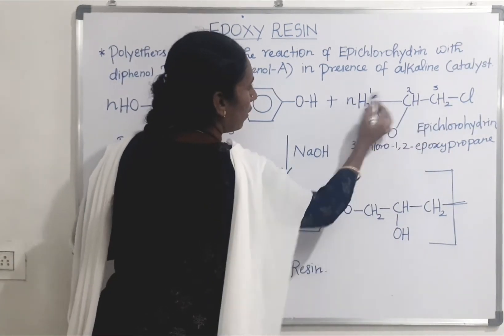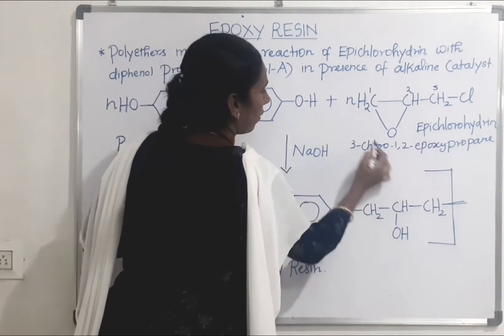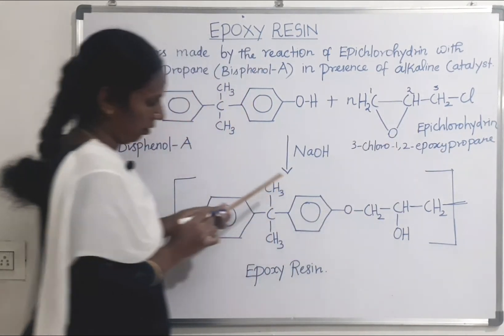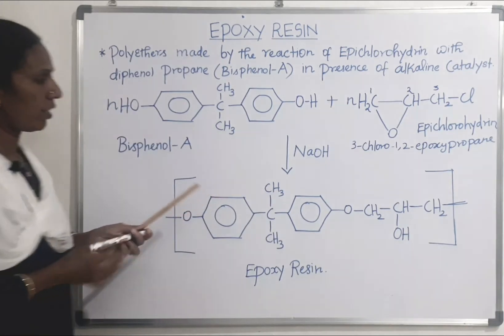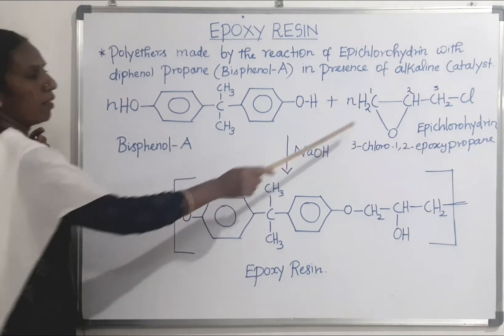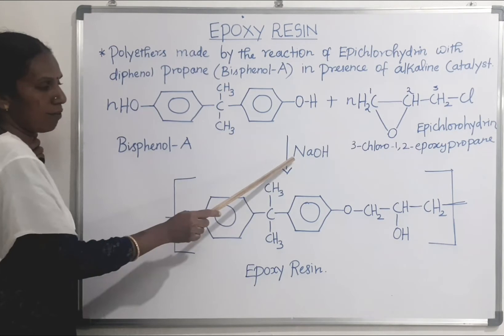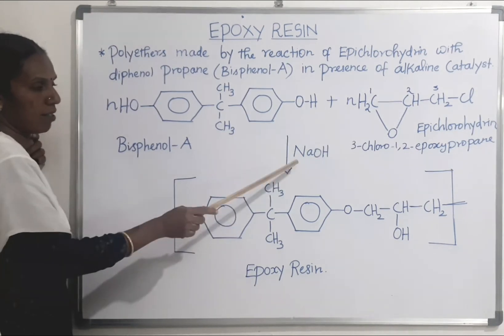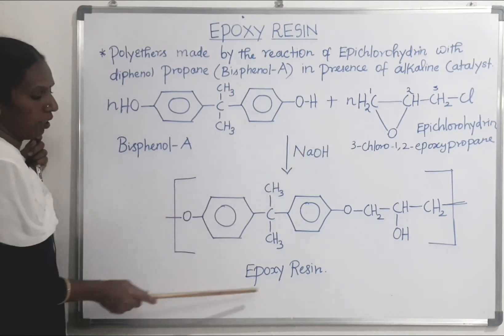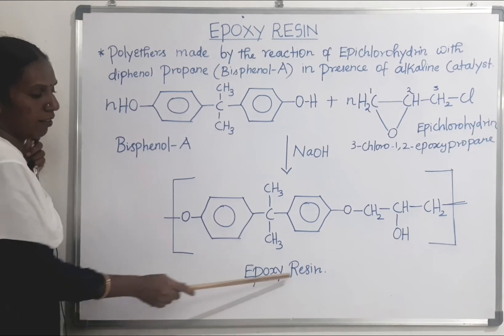3-chloro-1,2-epoxypropane — this group is the epoxy group. The reaction takes place between bisphenol A and epichlorohydrin in the presence of sodium hydroxide, which is the alkaline catalyst. We obtain the product epoxy resin.